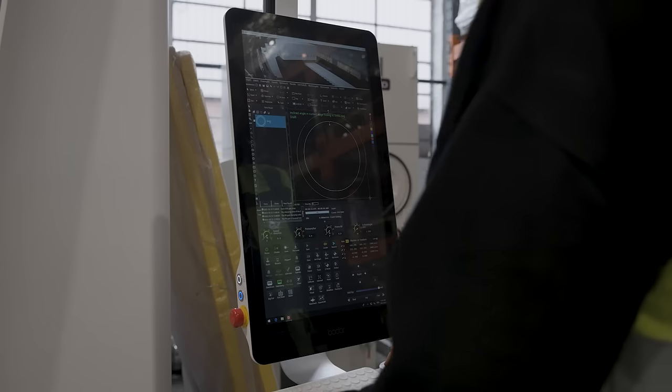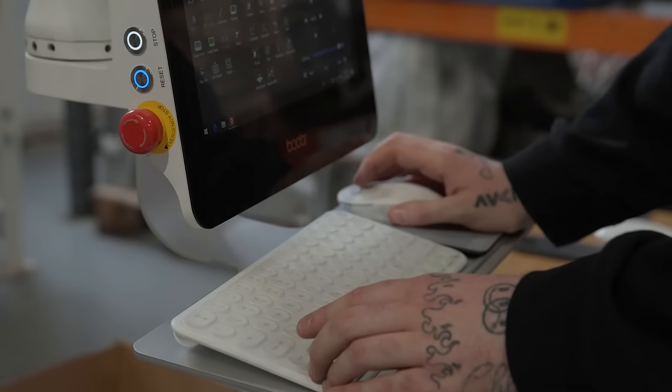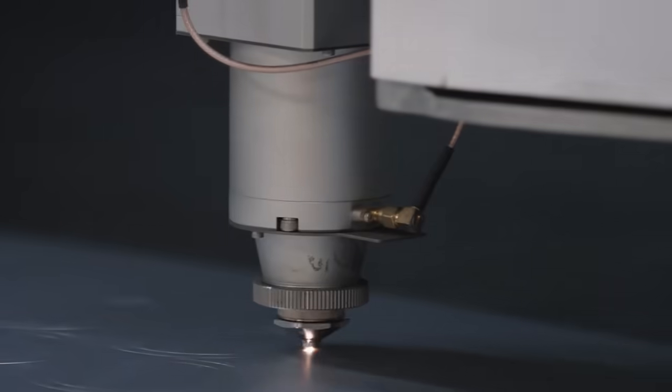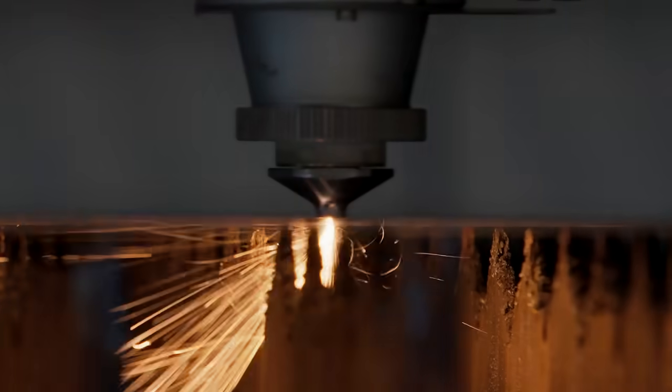So we now have the ability to laser cut parts in both brass, copper and aluminium, whereas we could only do stainless steel and steel before. To be able to do brass, copper and aluminium is a huge benefit to both us and our customers.